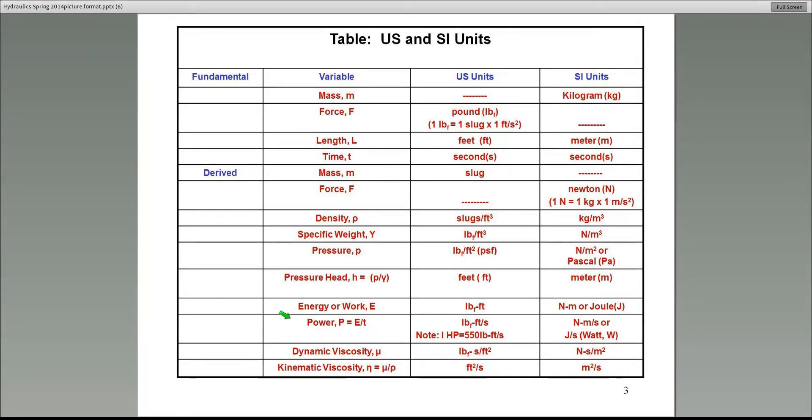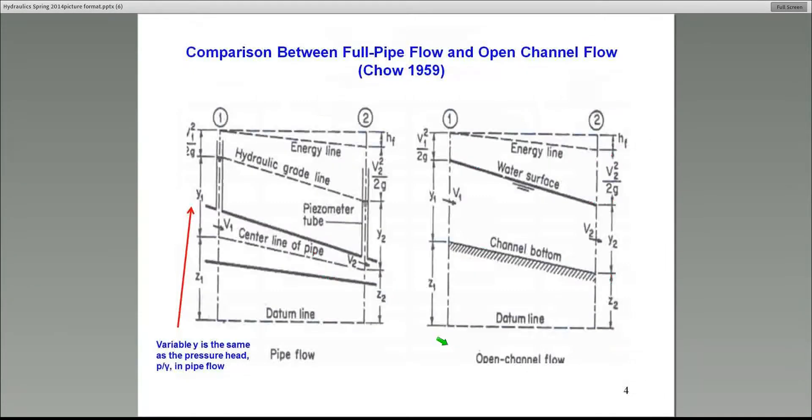We'll also come across power units, which is rate of work done, which is pound foot per second or Newton meter per second in the case of SI. Notice I'm using essentially consistent units to derive the units for power or energy. Same thing with dynamic viscosity and kinematic viscosity. If you ever use these quantities, make sure you stay with consistent units and you'll not make a mistake. The bottom line is whatever formulas we use in the field of hydraulics, it's better to stay with consistent units unless you're using some kind of empirical equation which calls for different types of units.